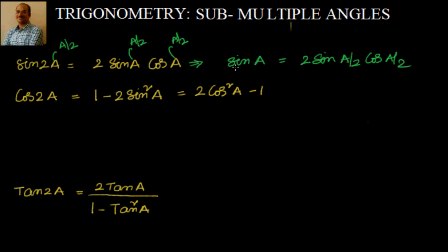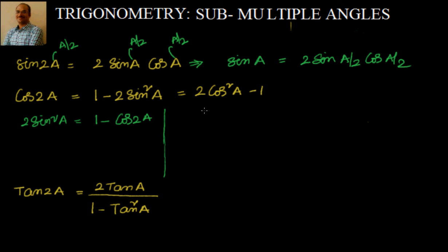We know the formula for sin a — we can write it as 2 sin(a/2) cos(a/2). Now, cos 2a = 1 − 2 sin²a, which means 2 sin²a = 1 − cos 2a. Similarly, 2 cos²a = 1 + cos 2a.